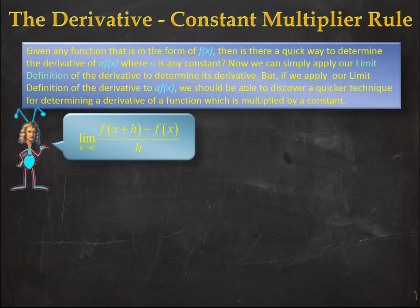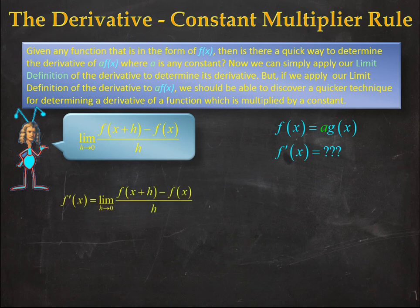We know we can apply the limit definition to solve these problems, but we want to see if we can apply it abstractly. The best way to do that is to create our function f(x) equal to a constant a times another function g(x), and we'll see if we can come up with a method that makes doing derivatives of this easier.